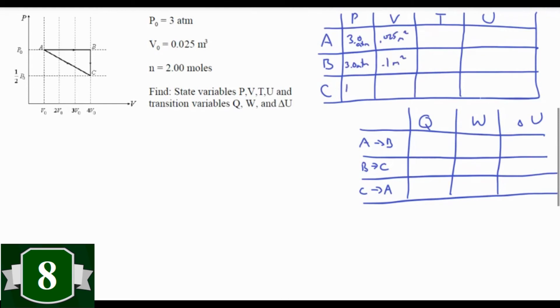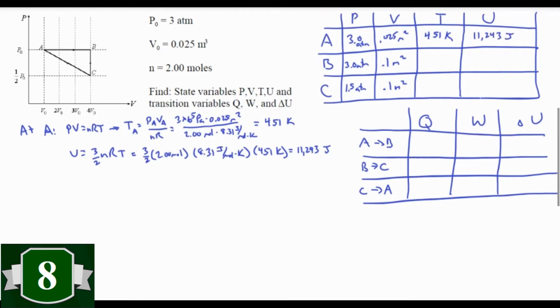We can fill in our pressure and volume just by looking at the graph. To find the temperature at point A, we can use the ideal gas law: PV equals nRT. Solve for T and plug in the numbers we're given. We get 451 Kelvin. To get the internal energy at A, we need to use three halves nRT. That's the equation I told you is not on your reference tables and you absolutely need to memorize. You know n, you know r, you know t. Plug them in, you get 11,243 joules. You can do that again at state B, or you can use the combined gas law to figure out that it's quadrupled the temperature, or 1804 Kelvin. Use three halves nRT again, you get quadrupled the internal energy, 44,974 joules. Do the exact same thing for C and you'll get 902 Kelvin and 22,487 joules. There you go, that's all of our state variables.